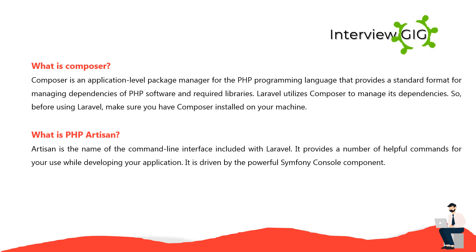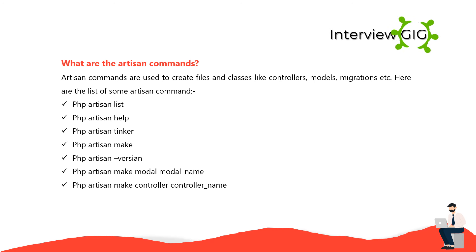What is PHP Artisan? Artisan is the name of the command-line interface included with Laravel. It provides a number of helpful commands for use while developing your application and is driven by the powerful Symfony console component. Artisan commands are used to create files and classes like controllers, models, migrations, etc. Some Artisan commands include: php artisan list, php artisan help, php artisan tinker, php artisan make, php artisan version, php artisan make:model ModelName, and php artisan make:controller ControllerName.